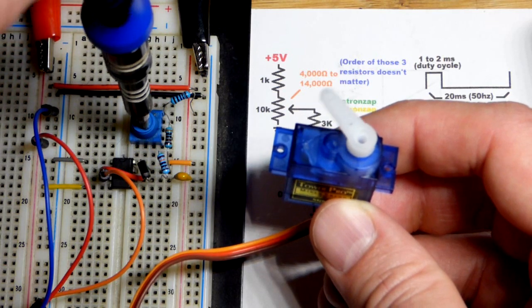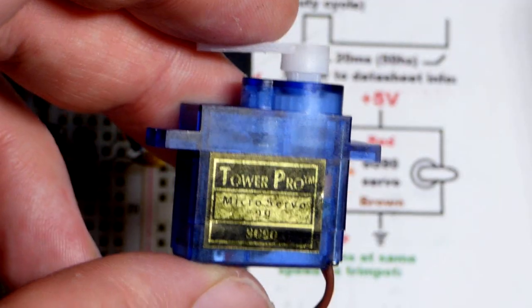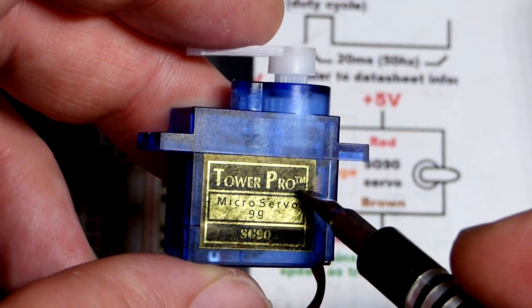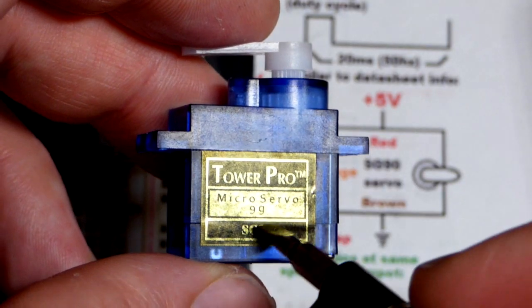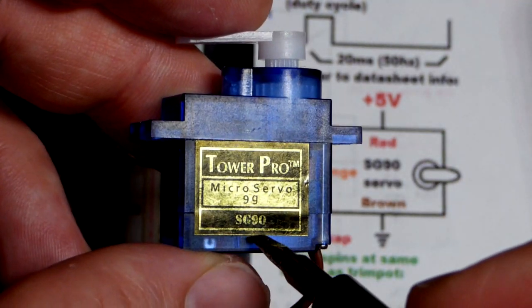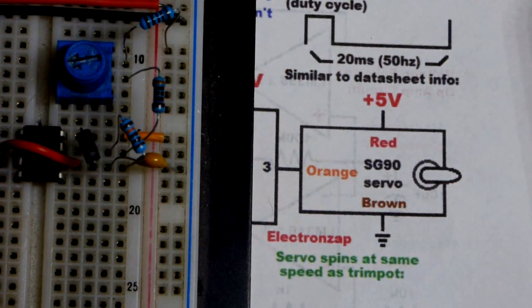Let's take a look at the servo. It's a Tower Pro, I think I got like five a long time ago. The part number is SG90, that's the datasheet you want to look up if you're going to use this.